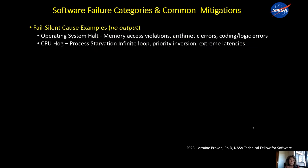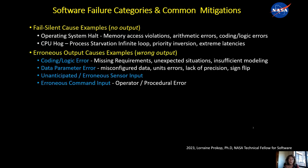Some examples of the fail silent case: the operating system halts due to memory access violations, arithmetic errors, underflow, overflow, or priority inversion where some processes are being starved. But the erroneous output case is a broader case, and it turns out the vast majority of the manifestations for software errors are in this case — and I'll show you the statistics.